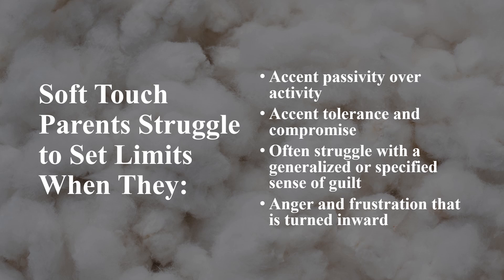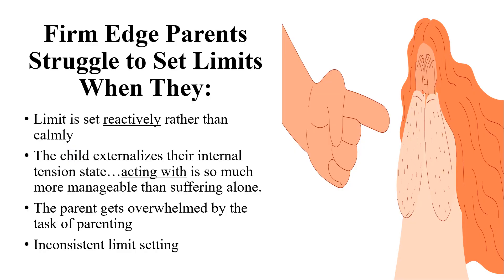Many times these soft-touch parents are taking anger and frustration and turning it inward. Firm-edge parents tend to do the opposite — their struggles are setting limits reactively rather than calmly. The child externalizes their internal tension state and acts with the parent. This is the parental tantrum — when the child and the parent have a tantrum together. This acting-with is so much more manageable than suffering alone, and it reinforces the child's sense of omnipotence if they can make an adult go out of their parenting zone and make mistakes. Too much power for the child.